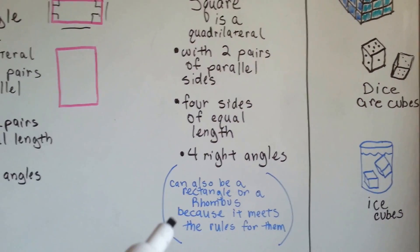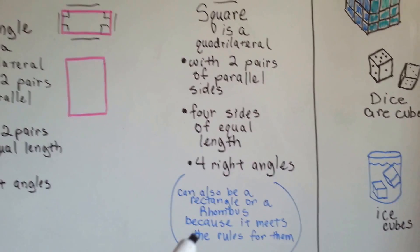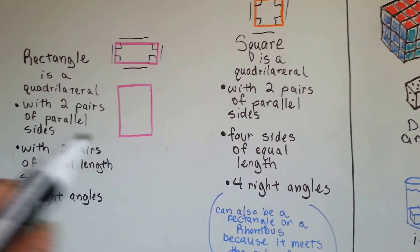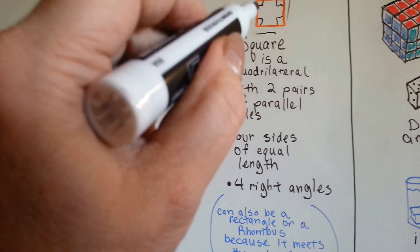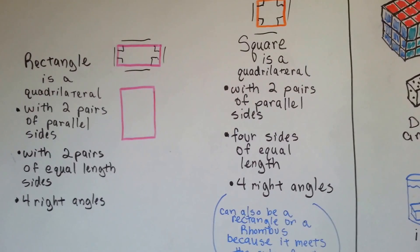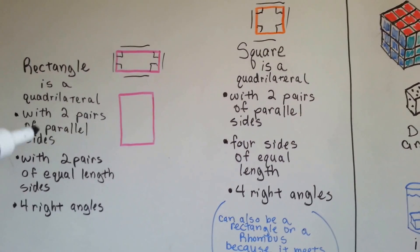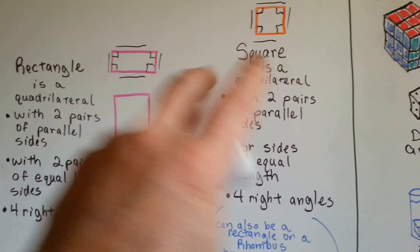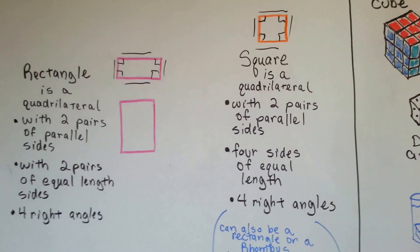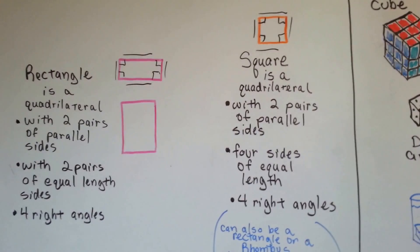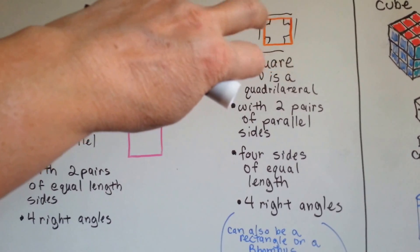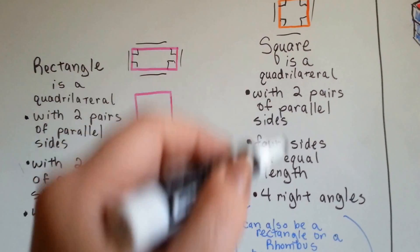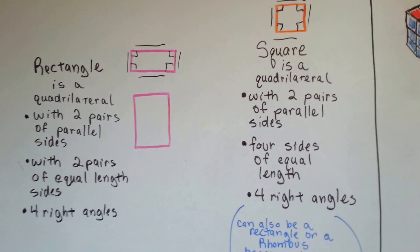A square can also be a rectangle or a rhombus, because it meets the rules for both. Look at this square and tell me if it fits the rules for a rectangle. Does it have two pairs of parallel sides? Yes, it does — one, two. Does it have two pairs with equal length sides? Yes. Does it have four right angles? Yes, it does. So a square can be a rectangle.